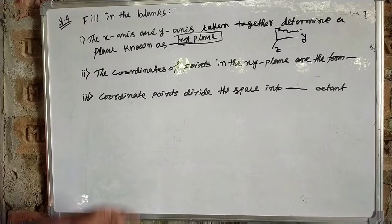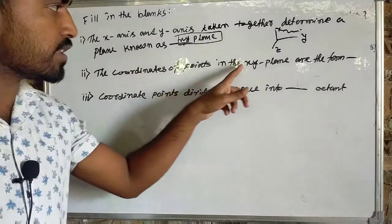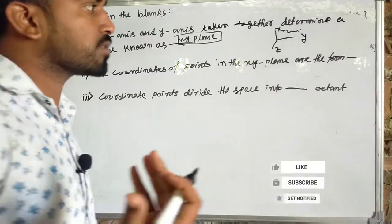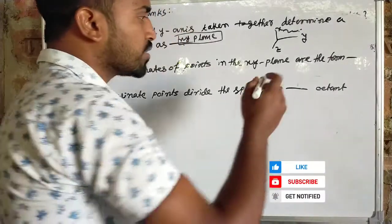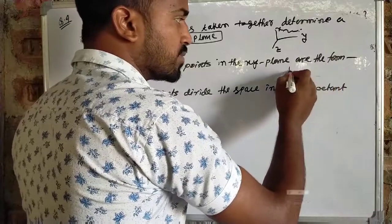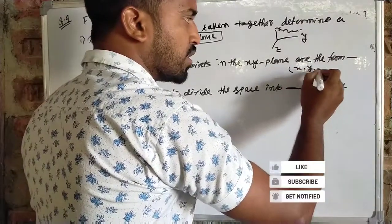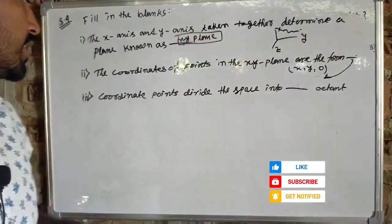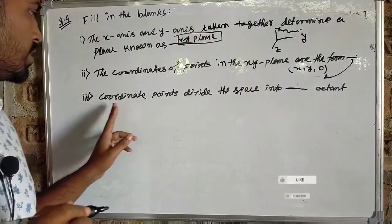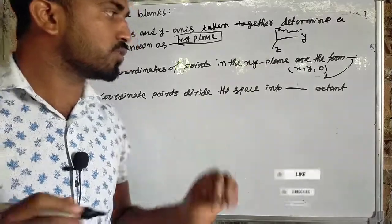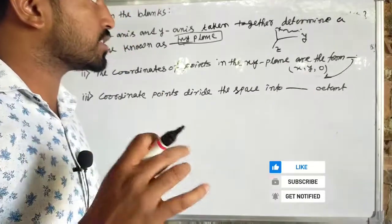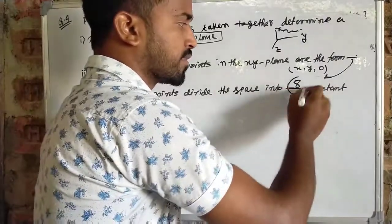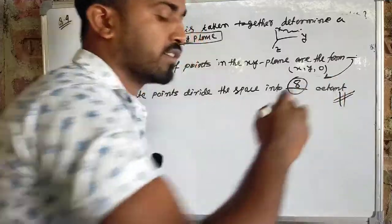The X-axis and Y-axis: the coordinates of the points on the X-axis are such that X-axis equals zero. We can see Y is 0, meaning Z is not 0. The coordinate planes divide the 3D space into octants.